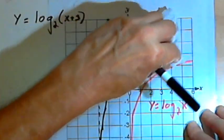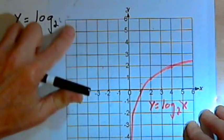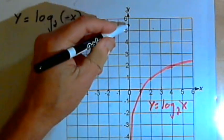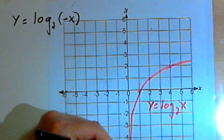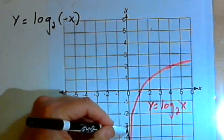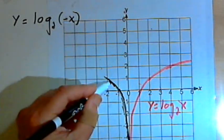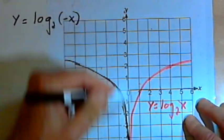If I wanted to reflect the graph across the y-axis, all I would have to do is take the x and put a negative sign in front of it. The vertical asymptote would be the same. But the graph would then be reflected across that y-axis.